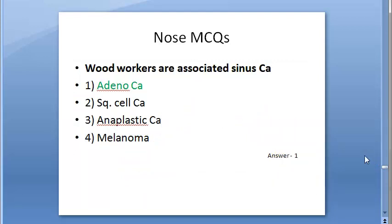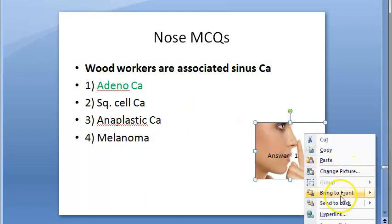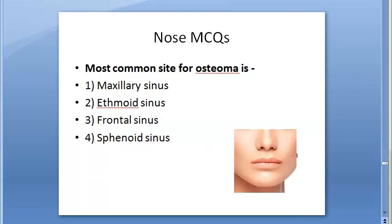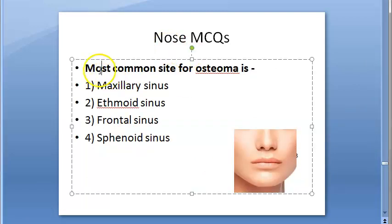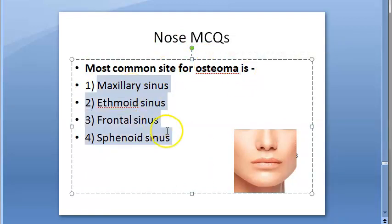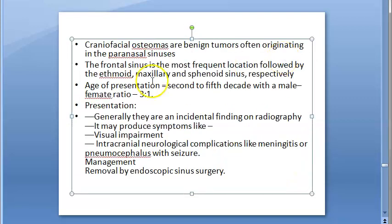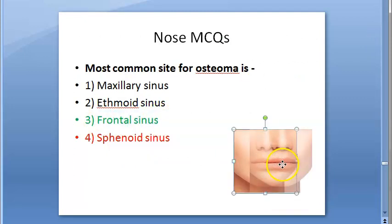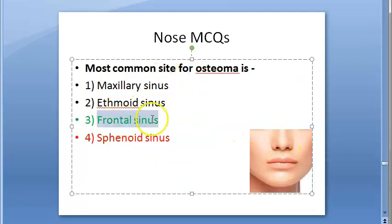Next question: most common site of osteoma among the paranasal sinuses. The answer is the frontal sinus — it is the most frequent location for osteoma. The term fronto-ethmoidal is also used in this context.